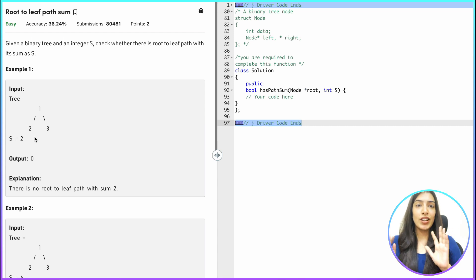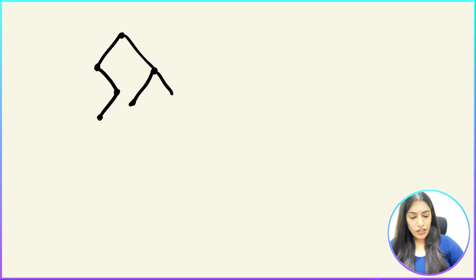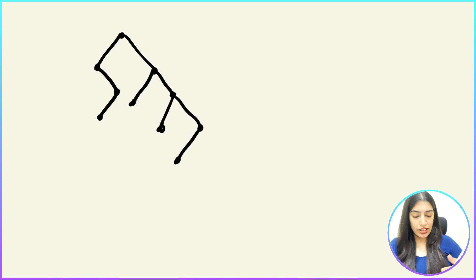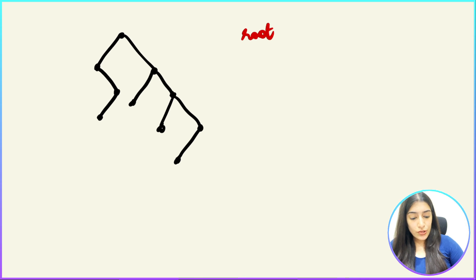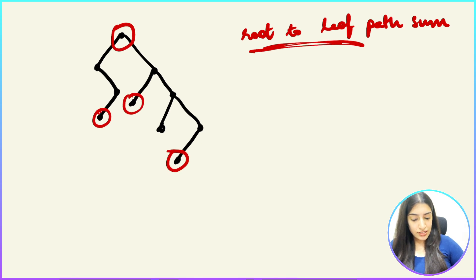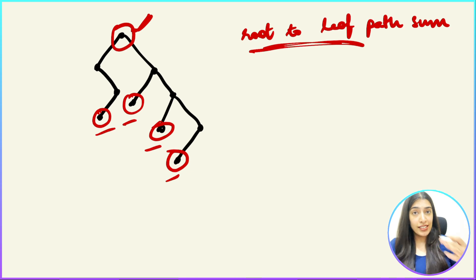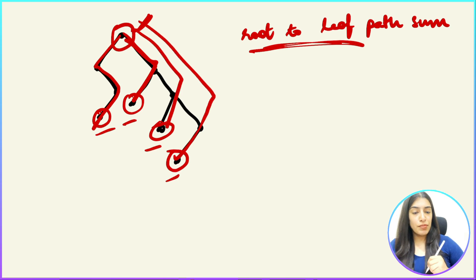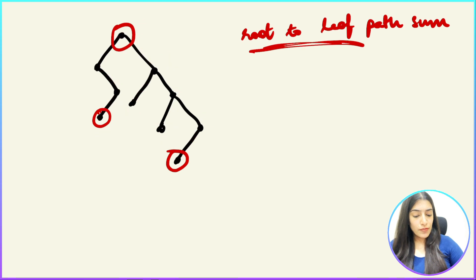Let's look at a diagram to understand the problem. Suppose we have a binary tree — it can look like anything. A binary tree means any node can have one or two children. The question asks us to check for a root-to-leaf path sum. Root-to-leaf means the path must start from the root and end at any leaf. These four nodes are the leaves in our example, and this is the root. Each path from root to a leaf is one candidate path.